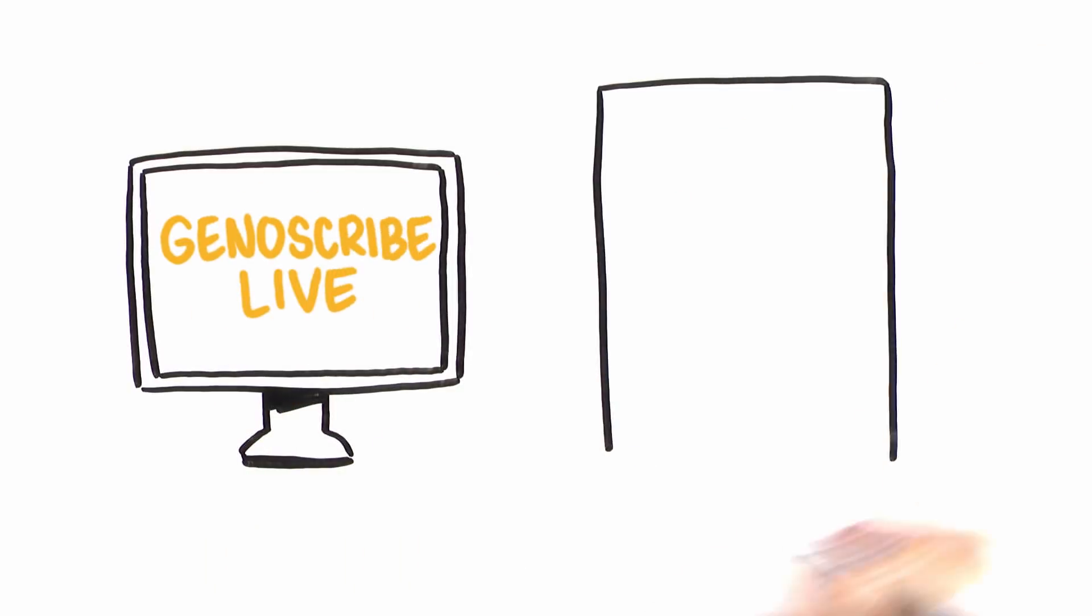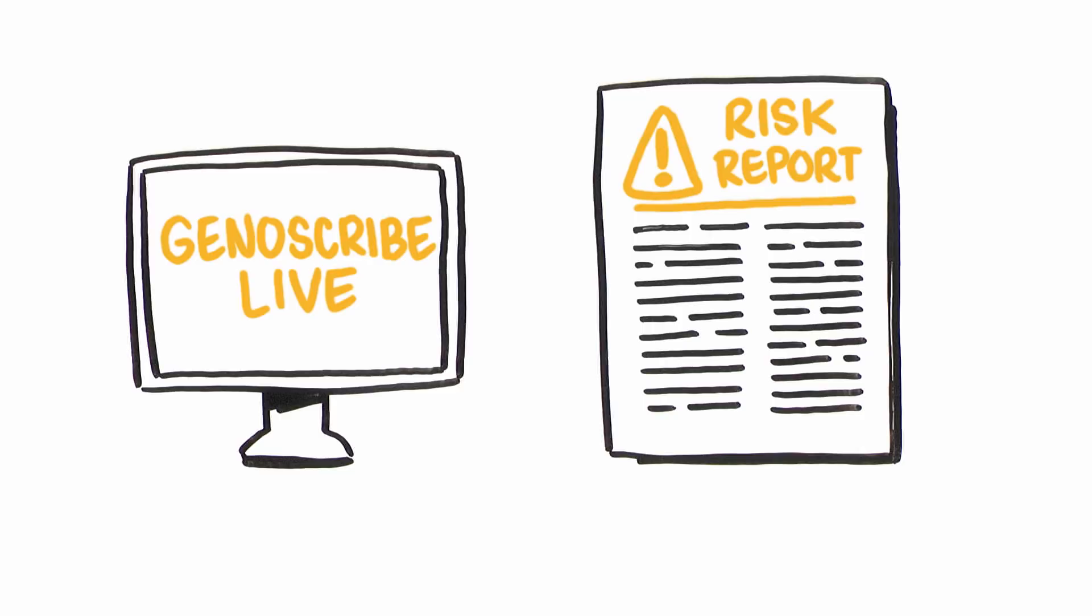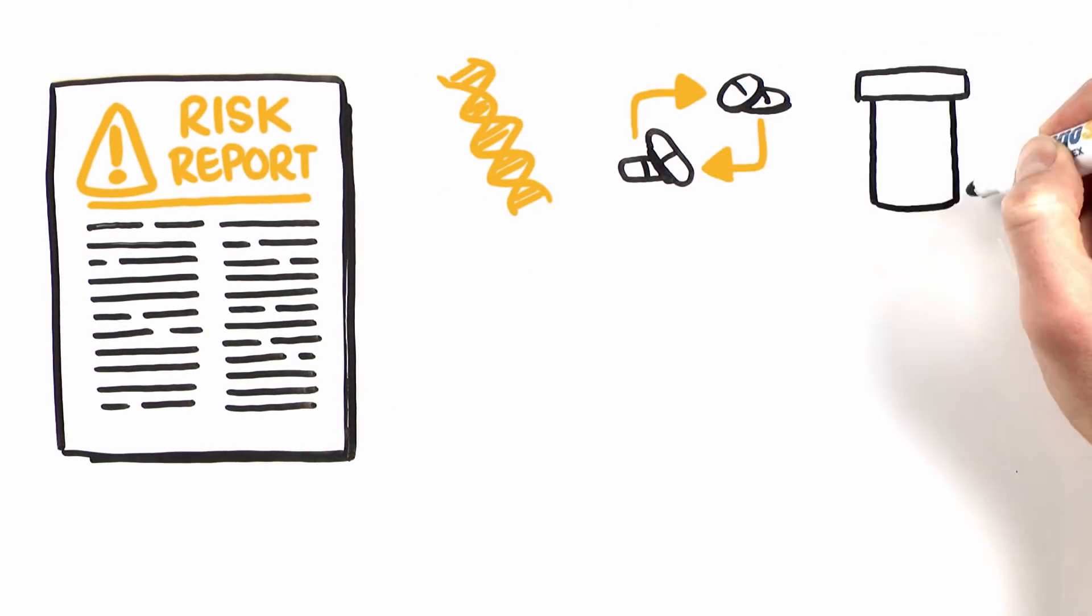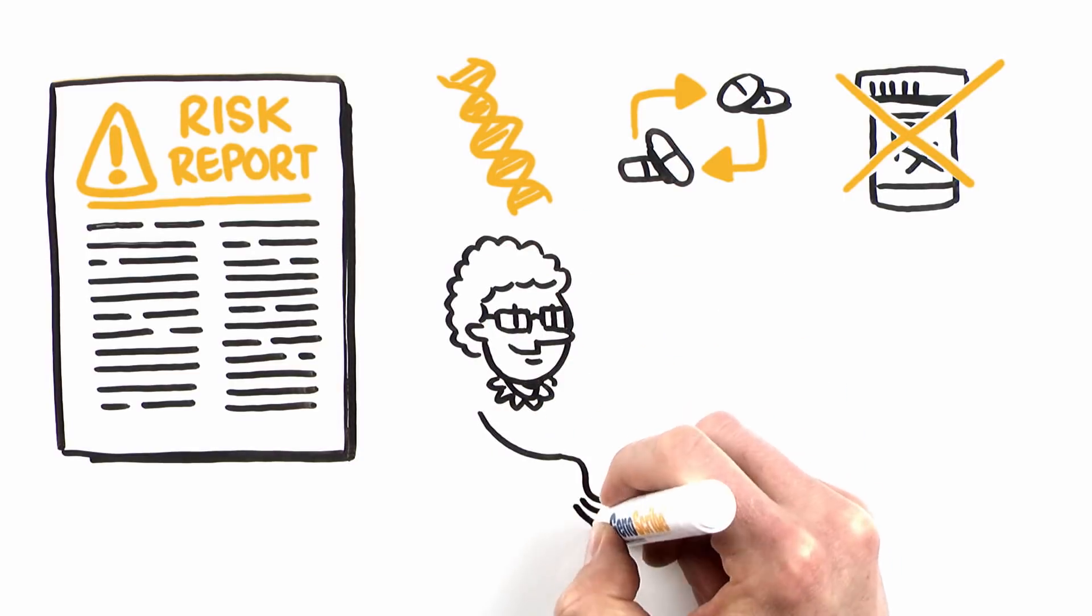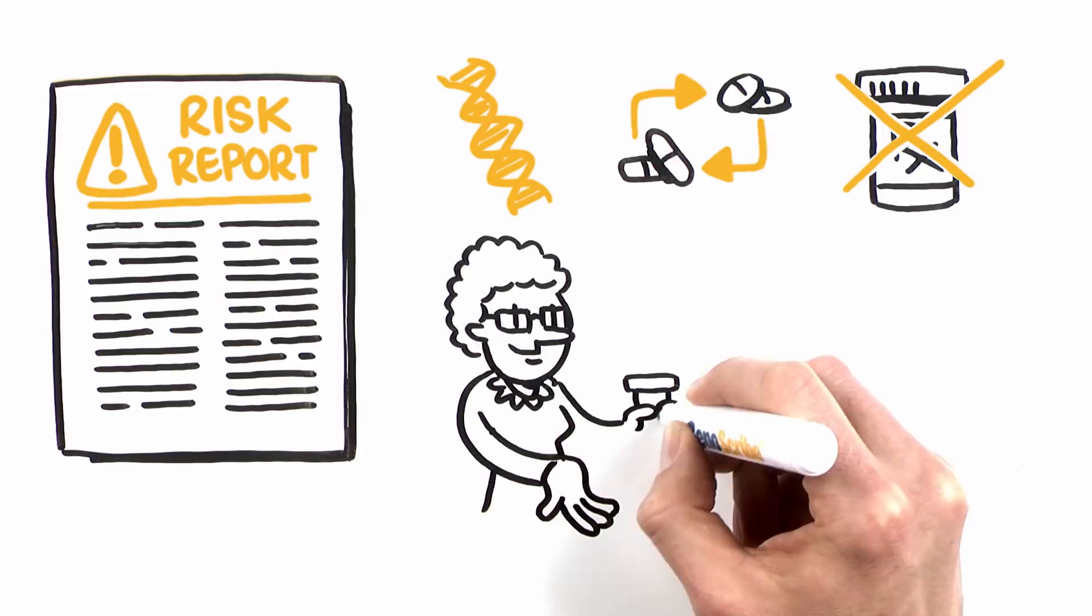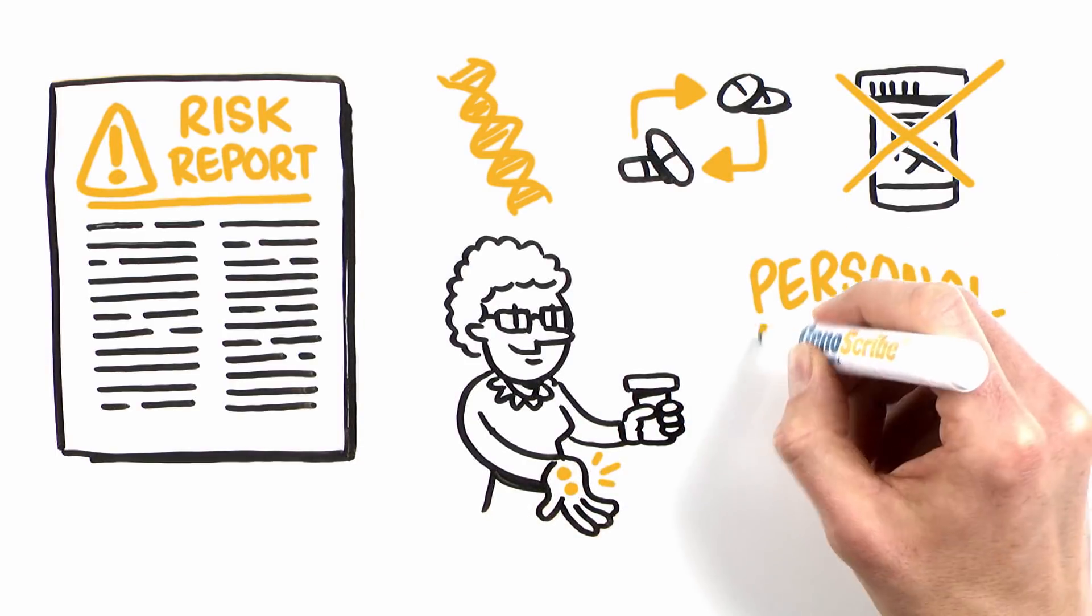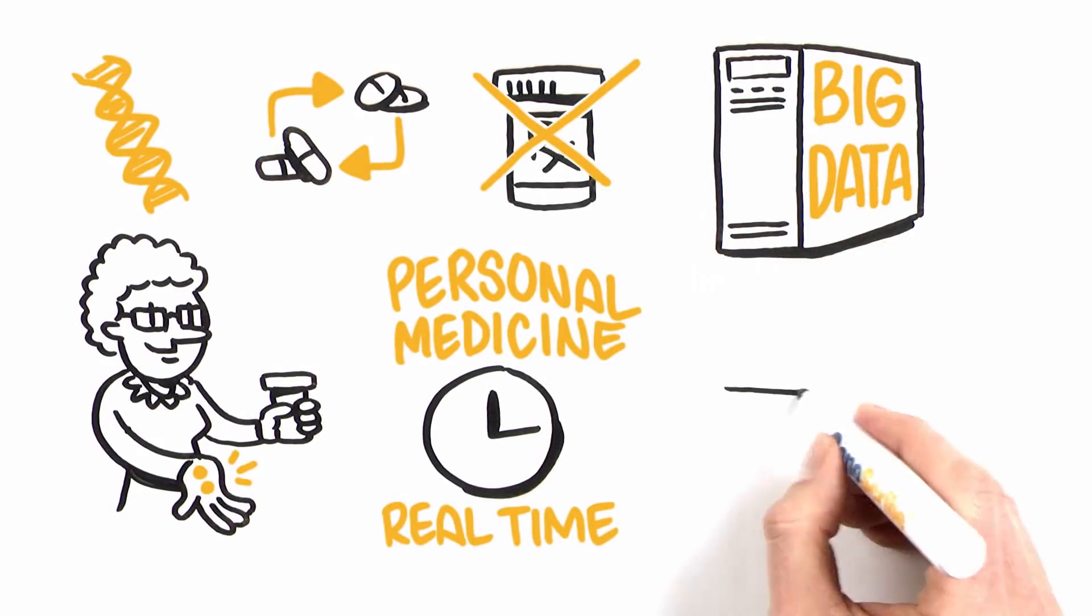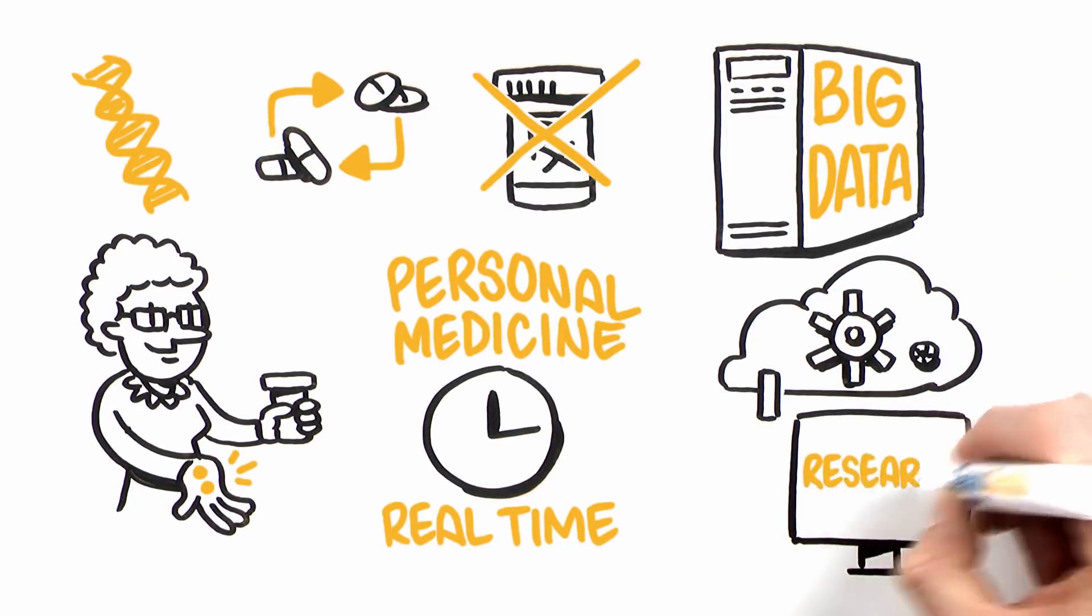Genoscribe Live then presents a risk report detailing all of the potential issues for Anita's proposed regimen. Genetics, drug interactions, contraindications, and more are all taken into account to build a total picture of the risks for Anita when she takes these pills together. This is personalized medicine happening in real time, empowered by big data, secured cloud availability, and the clinical application of vigorously reviewed scientific research.